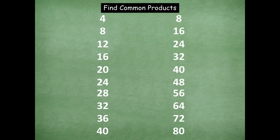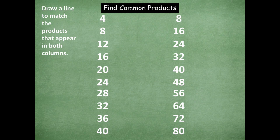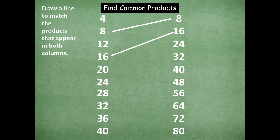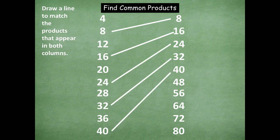Now draw a line to match the products that appear in both columns. For example, on the left hand side there's a product of eight and on the right hand side there's a product of eight, so draw a line to match those two. Then I also see 16 and 16, so draw a line for those. Go ahead and finish drawing lines for the products that match — and those would be 24 and 24, 32 and 32, and 40 and 40.